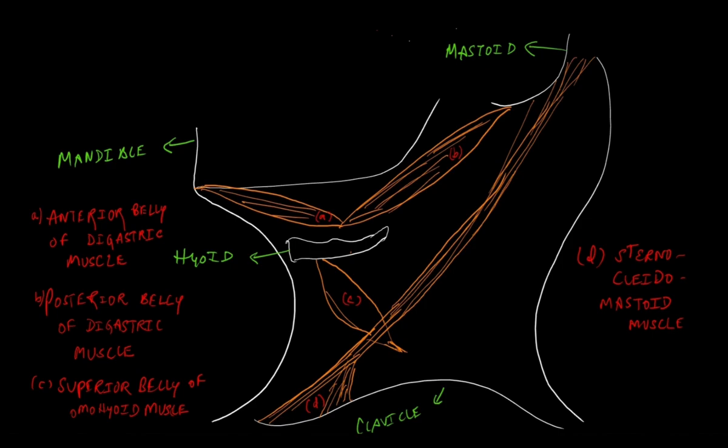these compartments like anterior triangle and posterior triangle with some landmarks that is the mandible, mastoid, hyoid bone, clavicle, and the muscles are anterior belly of digastric, posterior belly of digastric, sternocleidomastoid, and superior belly of omohyoid. We know the sternocleidomastoid is the key muscle of neck. Thereby this divides the anterior triangle and posterior triangle.